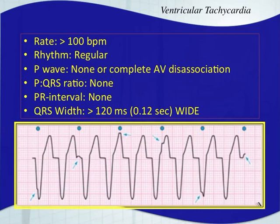Greater than 100 beats per minute — you guessed it — ventricular tachycardia. Much more common than the accelerated ventricular rhythm, and deadly. This is a deadly rhythm. The patient may be stable though, so there are different types of treatment depending on the patient's condition. The rhythm itself is not a sustainable rhythm and is probably caused by serious myocardial injury, and will require treatment at some point.